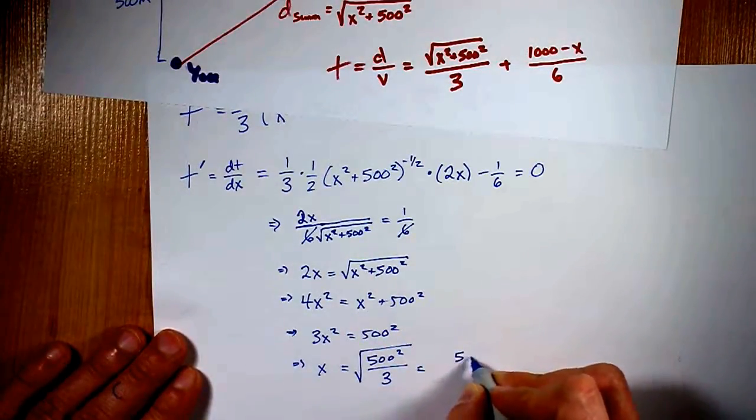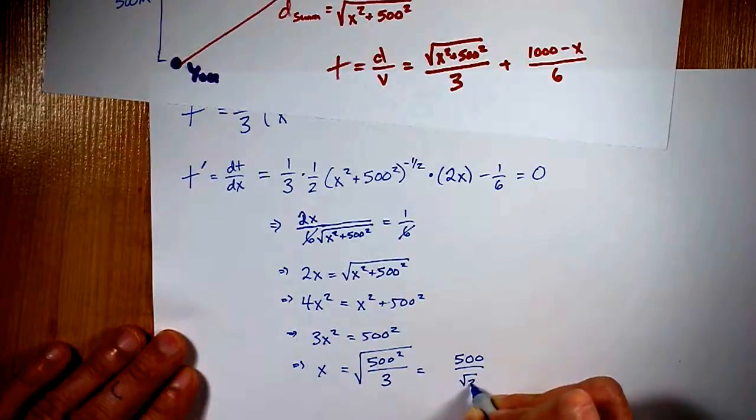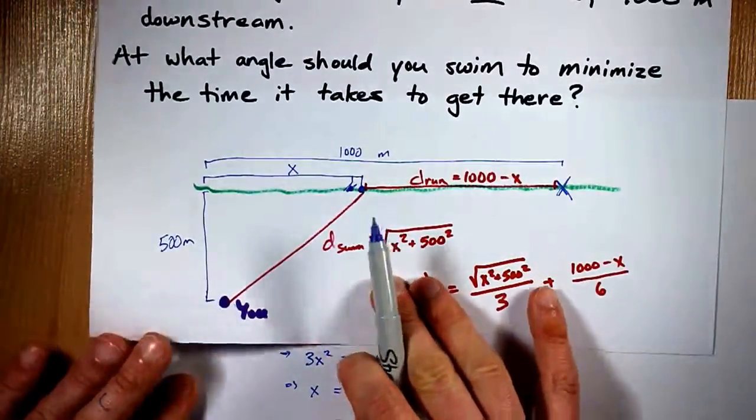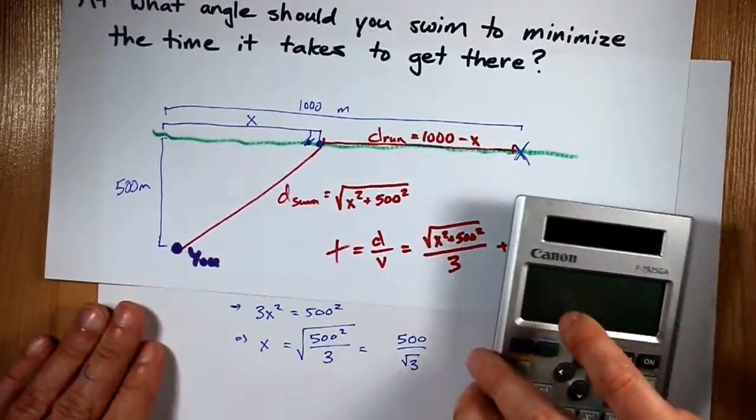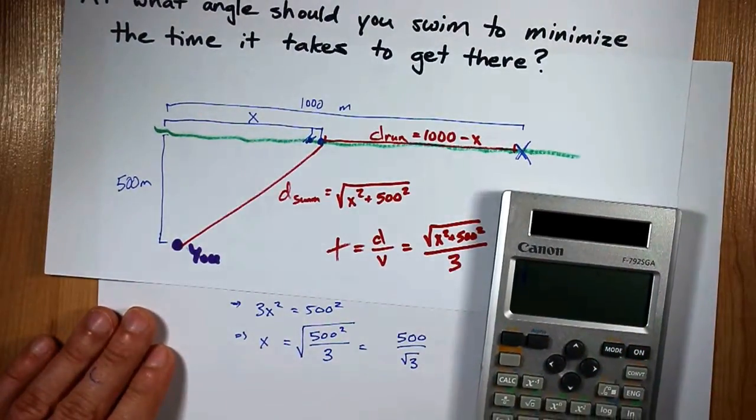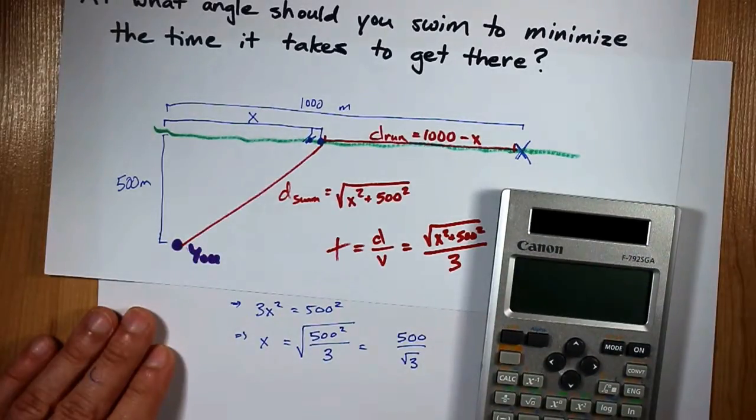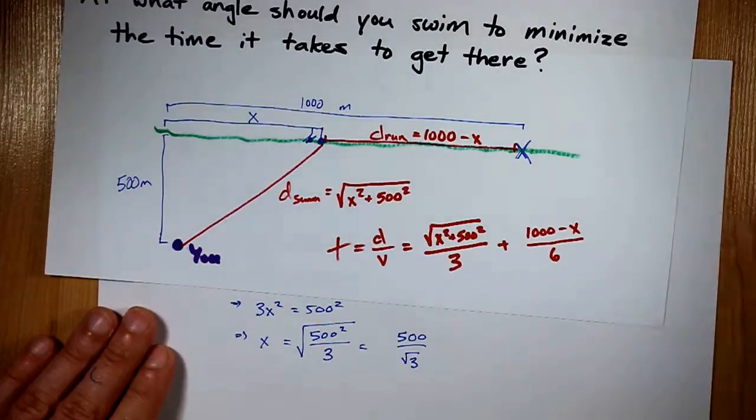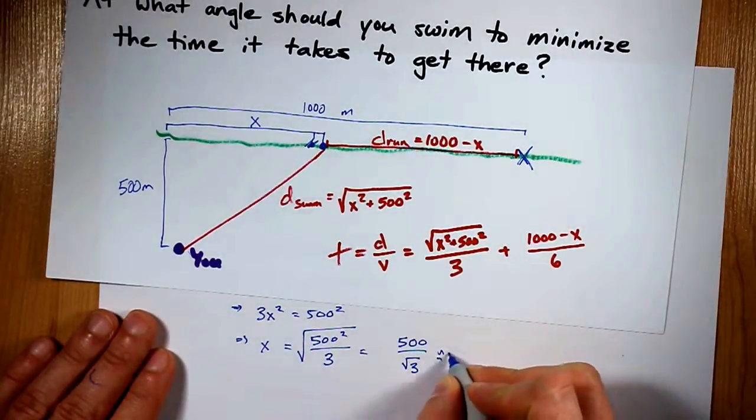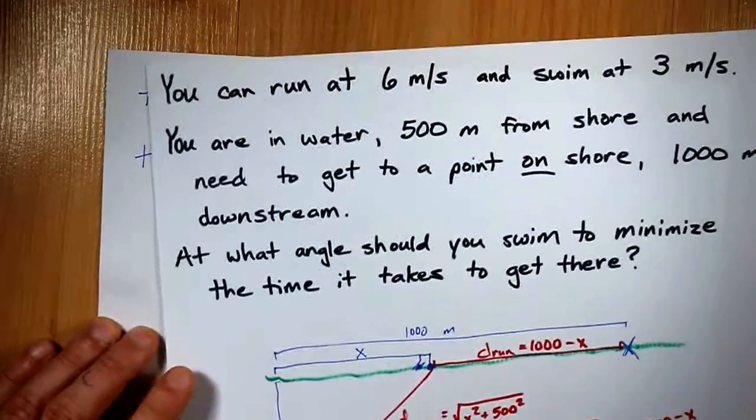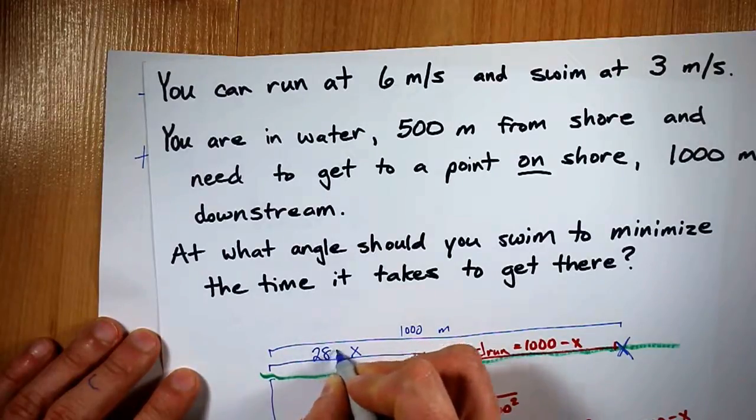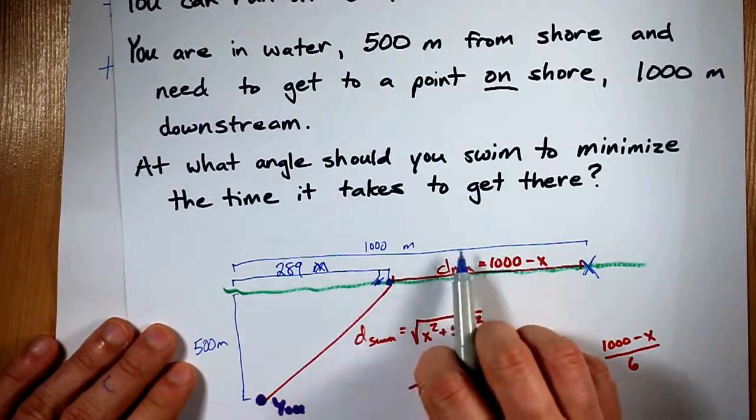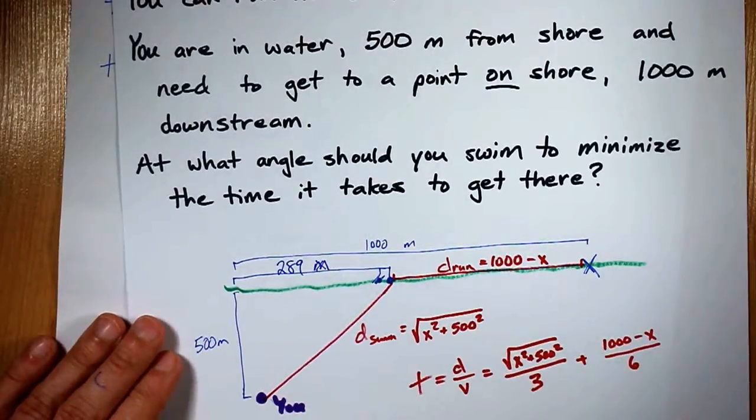I end up with 500 over root 3. So, the distance downstream that we need to swim to is whatever 500 divided by the square root of 3 is, it ends up being 289 approximately. Which means we want to swim downstream by 289 meters. And then we're going to run the extra 711 meters.